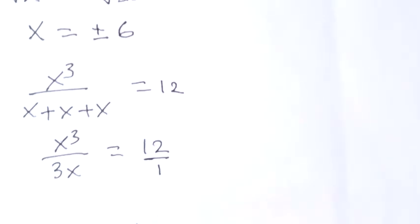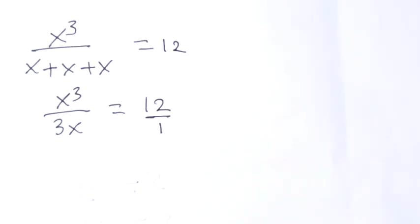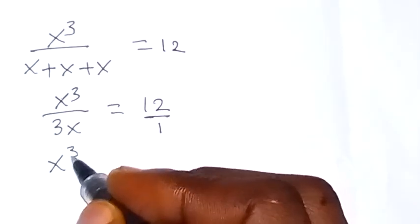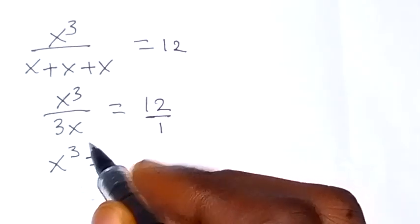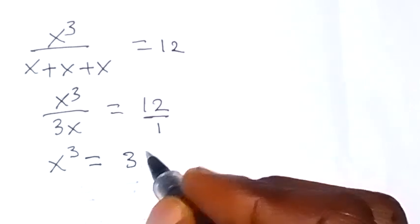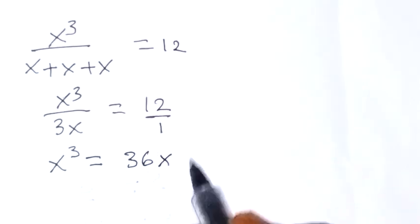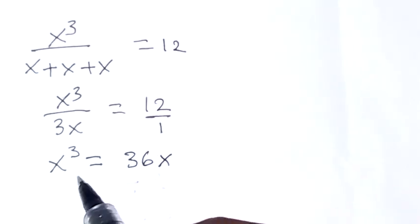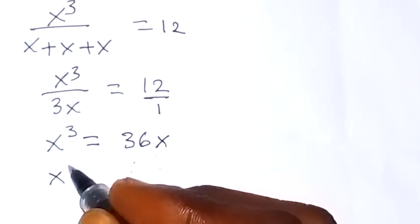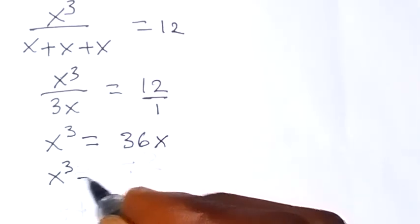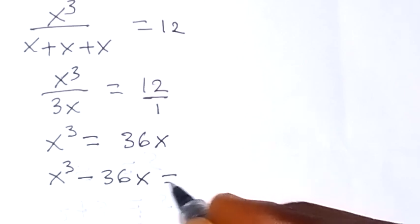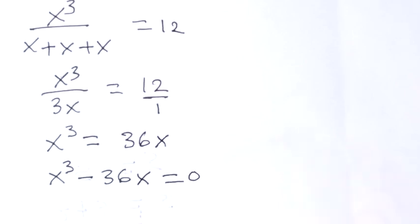Let's cross multiply from here directly. We have x raised to power 3 equals 3x times 12, which gives us 36x. Let's take 36x to this side to form an equation, giving x raised to power 3 minus 36x equals to 0.